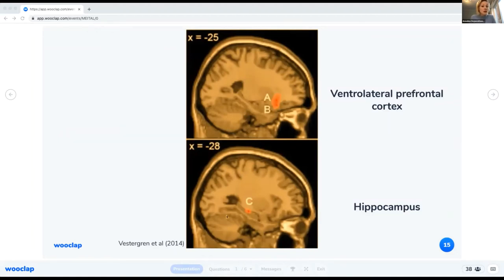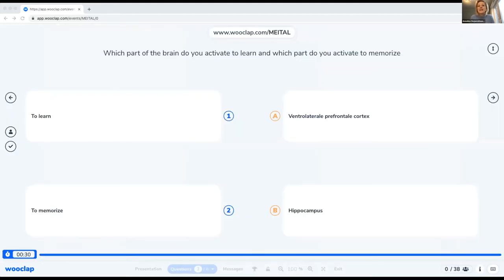And those regions are key to learning and memorizing. And it's a sign that people are really encoding information and knowledge into their brain. So let's see if you have been able to listen closely. Which part of the brain do you activate to learn, and which part do you activate to memorize? I'm going to reset the timer to give you some more time.